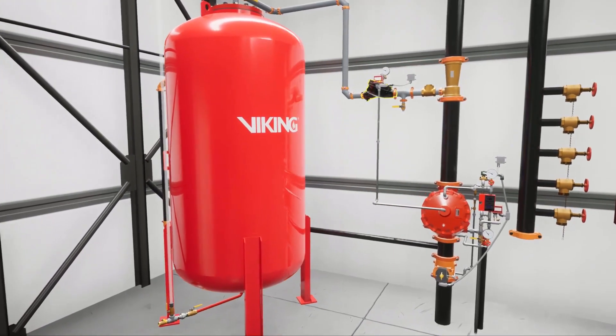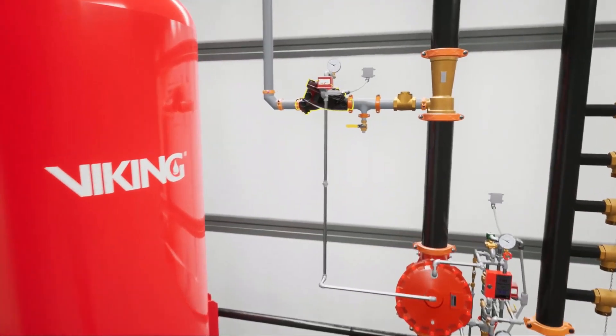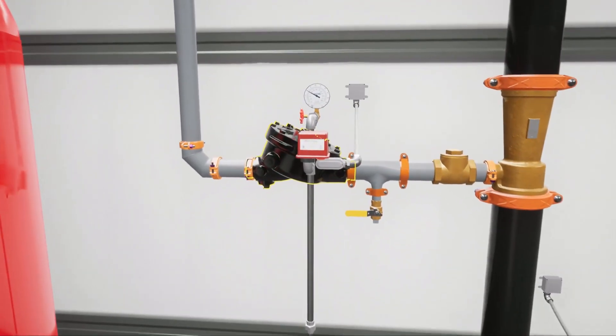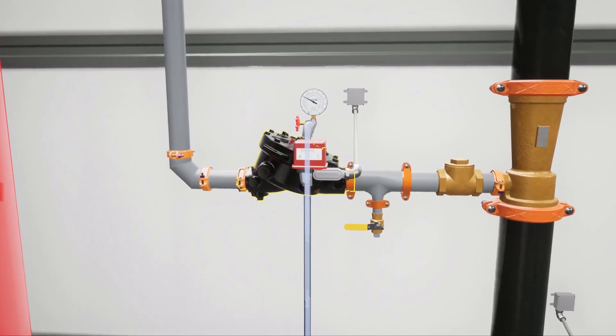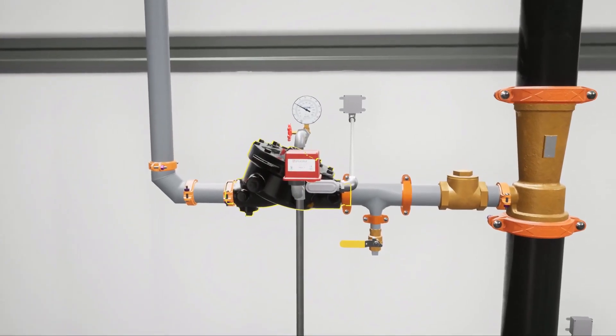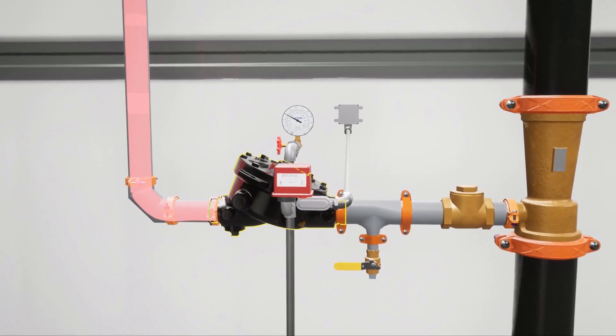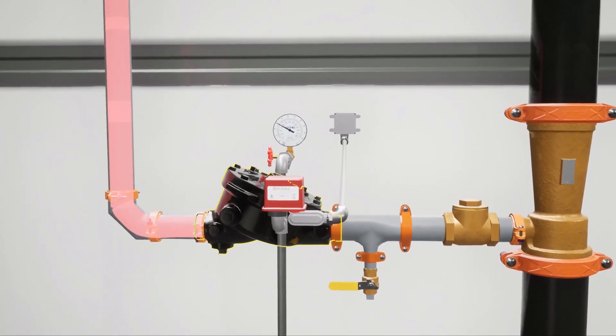The bladder tank concentrate piping leads to the concentrate control valve that is held closed by priming water. The concentrate control valve is holding back the foam concentrate supply until the system is activated.